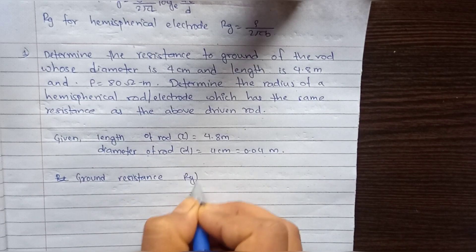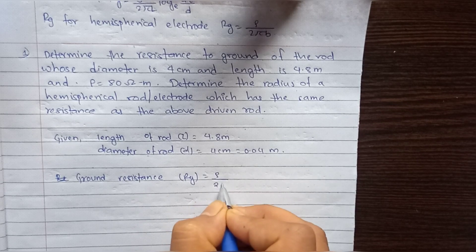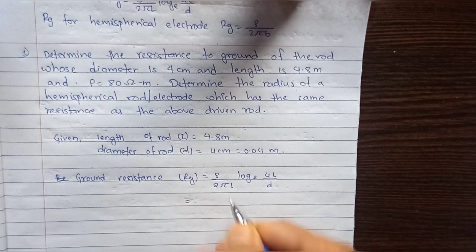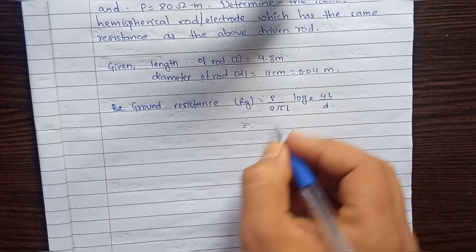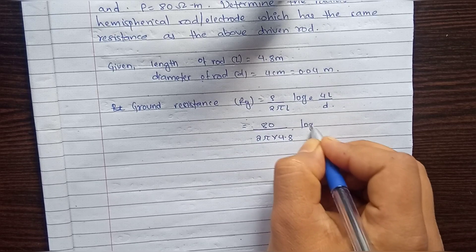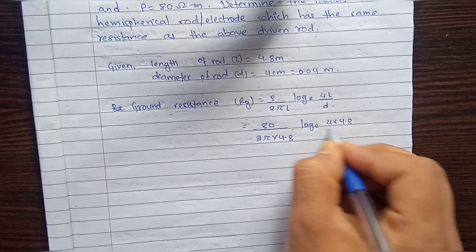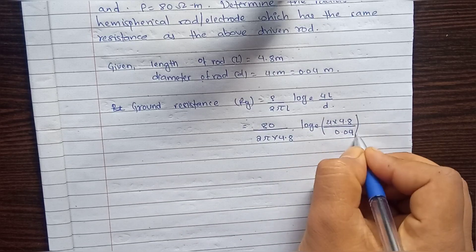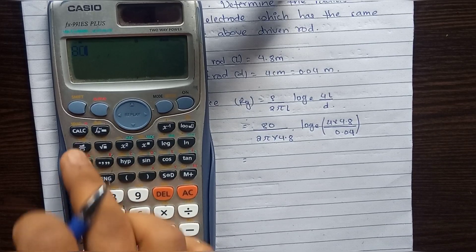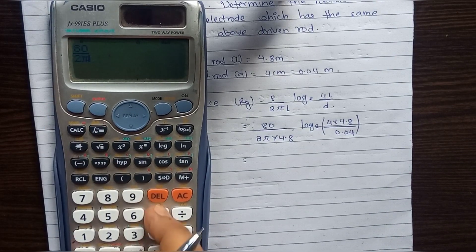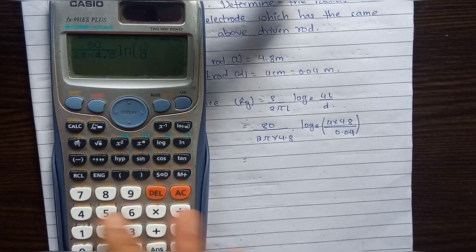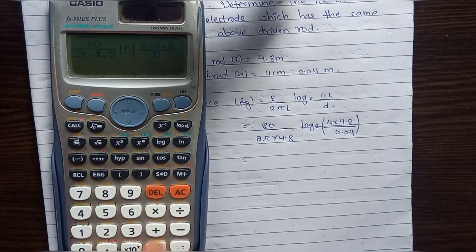Ground resistance to the rod Rg = ρ/(2πL) × ln(4L/d). Replacing the values: 80 ohm meter / (2π × 4.8m) × ln(4 × 4.8m / 0.04m). This equals 80 / (2π × 4.8) × ln(4 × 4.8 / 0.04).